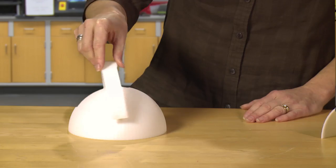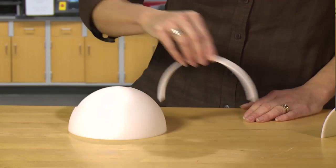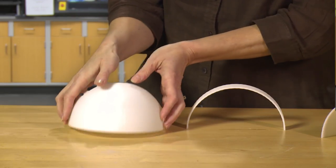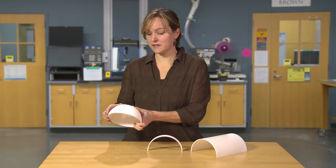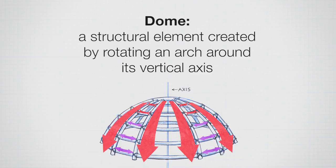If we now take an arch and we rotate it, we get a dome. A dome, while it has similarities, because of this closed ring at the bottom, has some differences. If I push on this, as long as that ring along the bottom can support tension, it's a much more stable and strong form. Thus we need less external support on a dome.